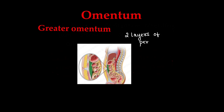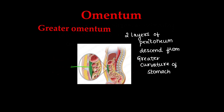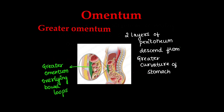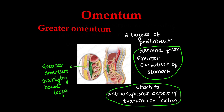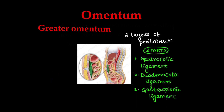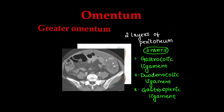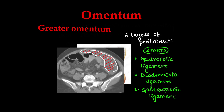The greater omentum is made of two layers of peritoneum. It descends down from the greater curvature of the stomach, shown in green, and overlies the small bowel loops in the abdomen. The second layer then goes back and attaches to the anterior superior aspect of the transverse colon. The greater omentum is usually visible on CT scan once there is some inflammation in the fat, making it appear more grey. Here the greater omentum is shown overlying the small bowel.